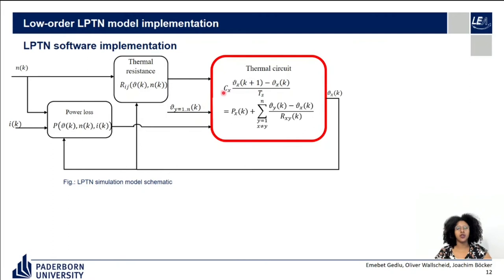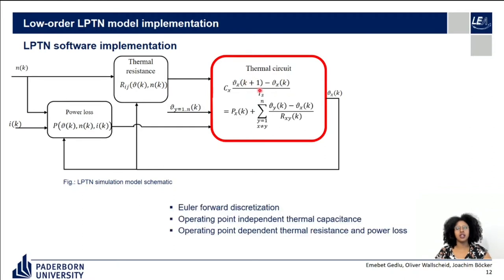The LPTN software implementation solves the thermal circuit equations. The derivative term is approximated using the Euler-forward method with a sampling time of 0.5 seconds. The thermal capacitance term is assumed to be operating-point independent, whereas power loss and thermal resistance are operating-point dependent, and are therefore modeled separately as parameter-varying terms.